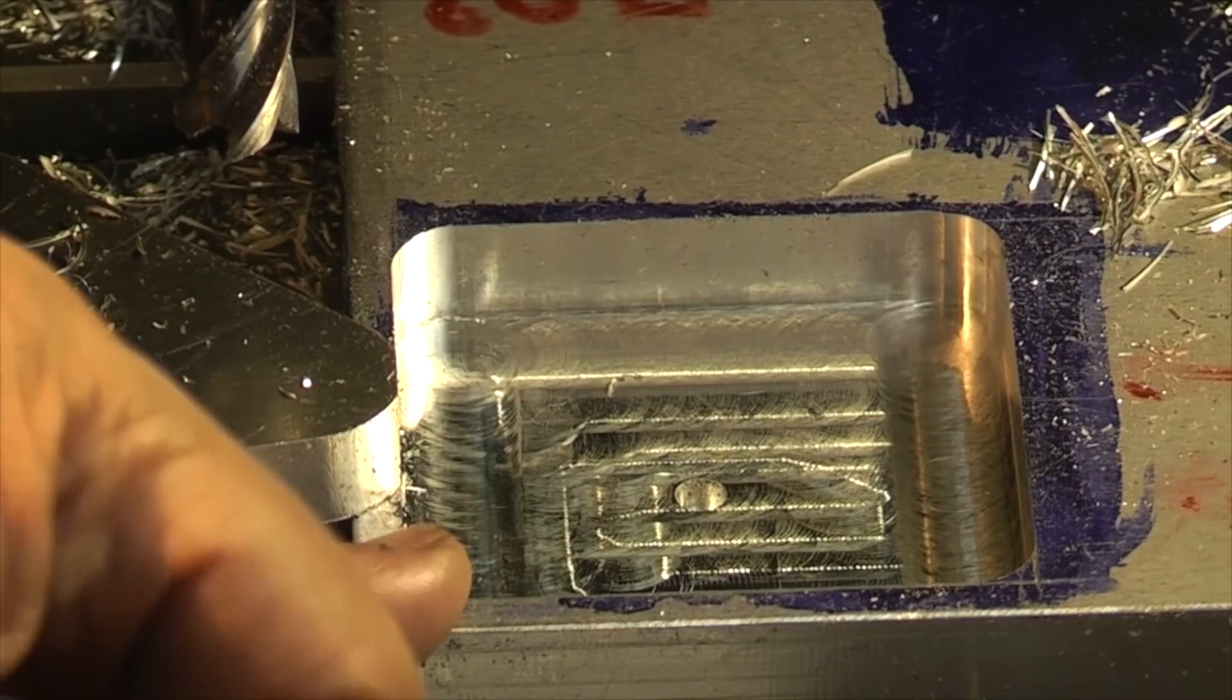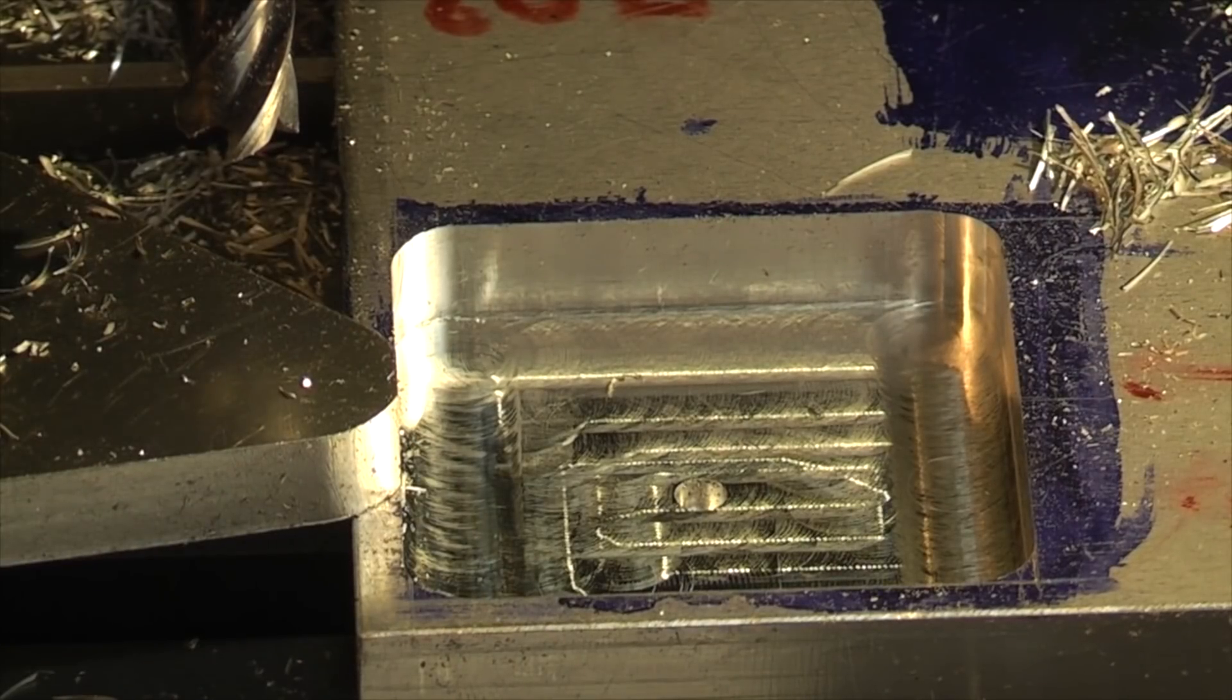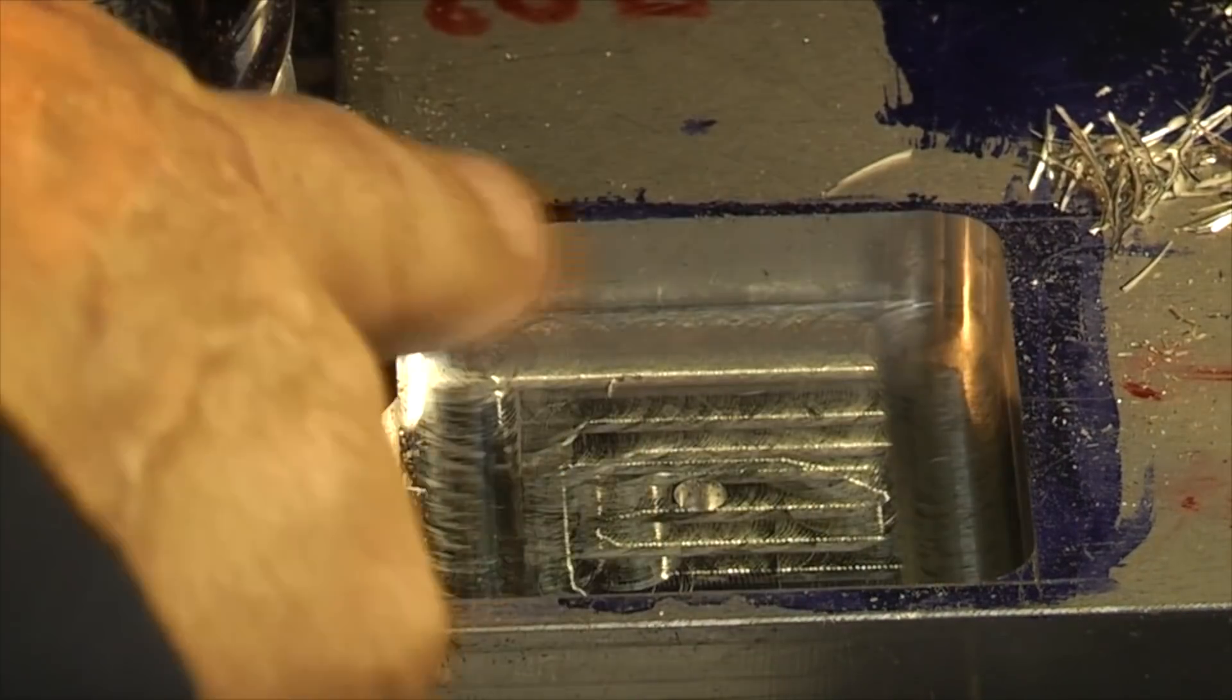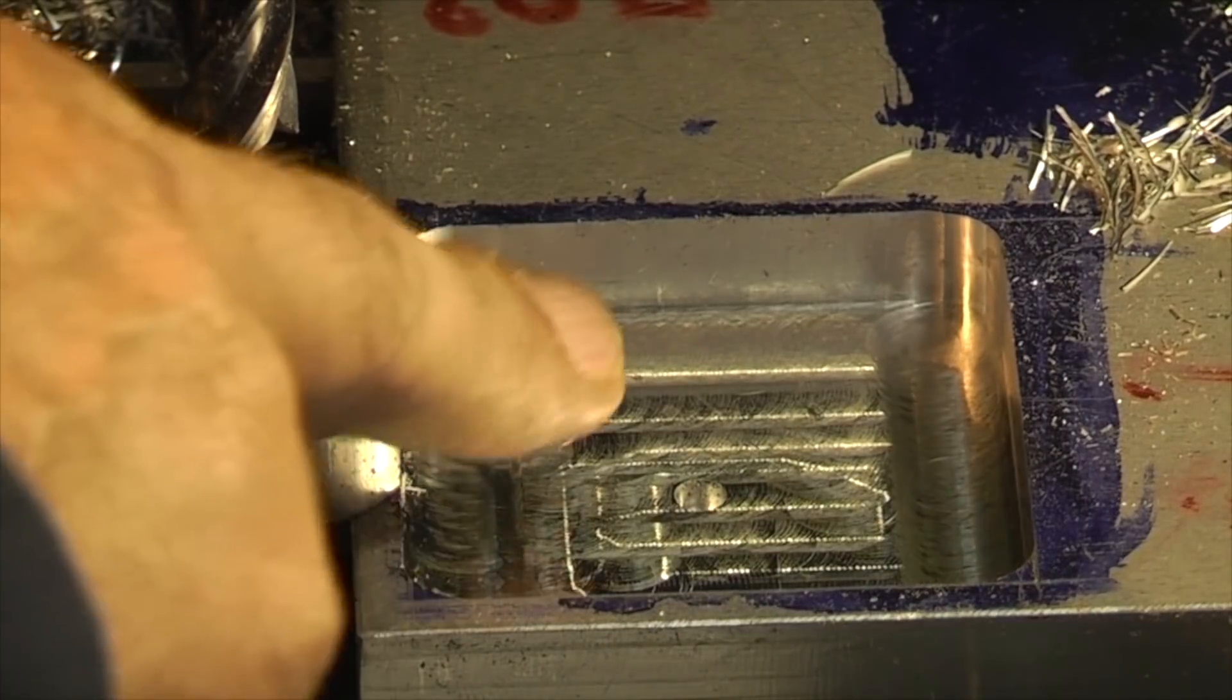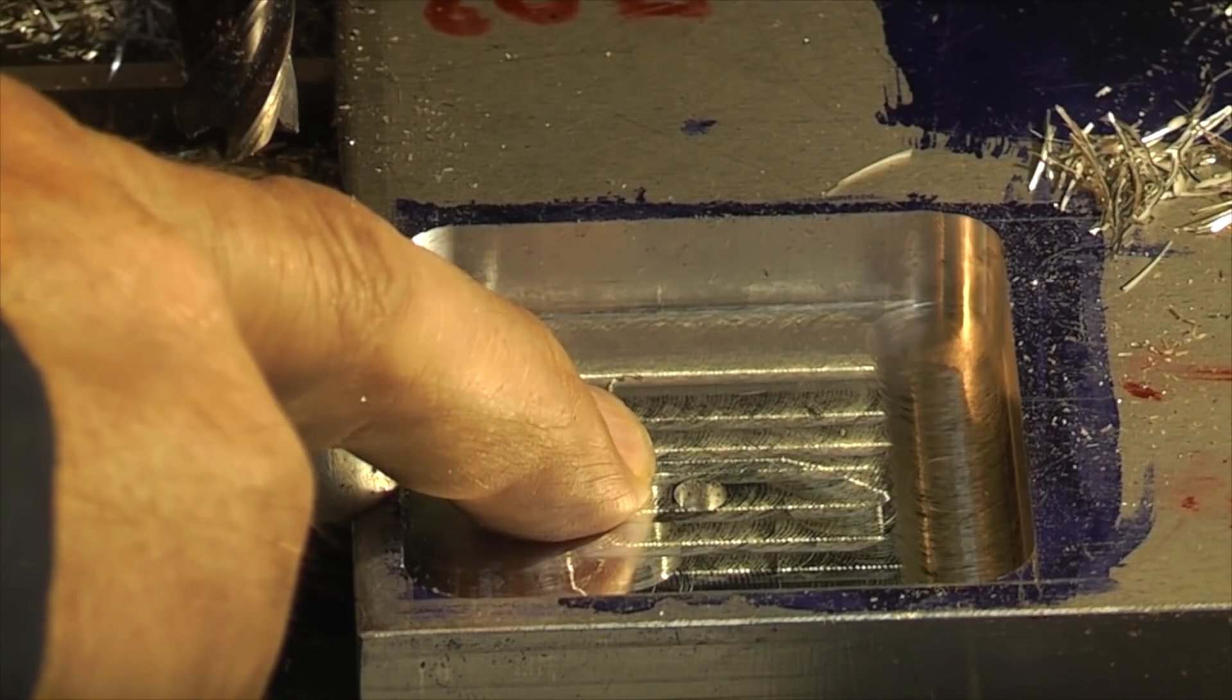Now this is the finished pocket for the stepper motor, so all I need to do next is drill the four holes that bolt the motor in and complete the hole in the middle for the register and the spindle to go through.